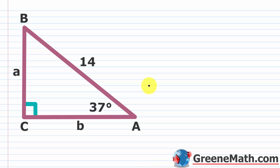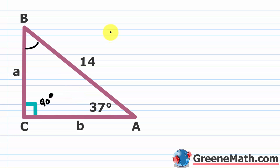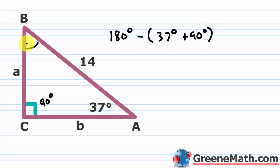In this particular case, we have a triangle with one side of 14 and one angle of 37 degrees. The measure of angle A is 37 degrees, and angle C is 90 degrees since it's a right angle. The sum of the three angles is 180 degrees, so 180 minus (37 plus 90) equals the measure of angle B. That gives us 53 degrees.